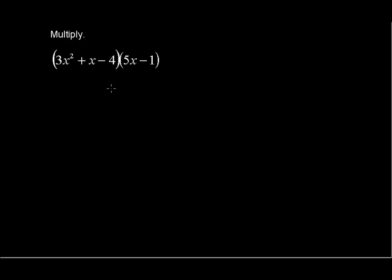Here we want to multiply two polynomials. We have the polynomial 3x squared plus x minus 4 times the polynomial 5x minus 1.